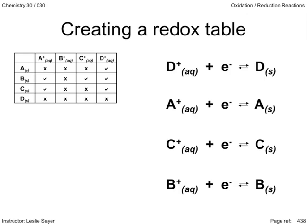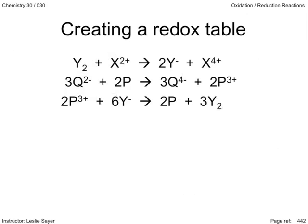Another way data can be presented so that you can create a redox table is by way of a series of chemical reactions, showing either products if the reaction is spontaneous, or no products if the reaction is not spontaneous. Here, there are three net ionic equations featuring four different hypothetical ions and elements. So we need to put together four reduction half-reactions.